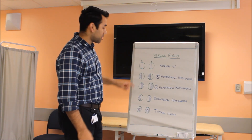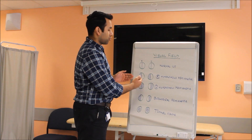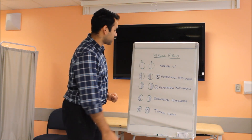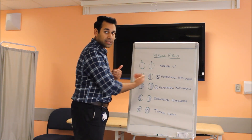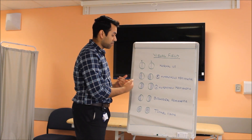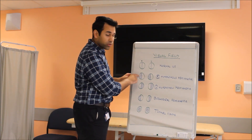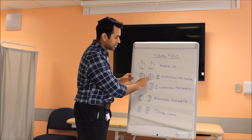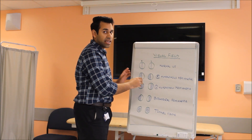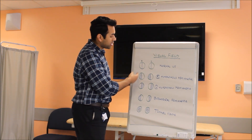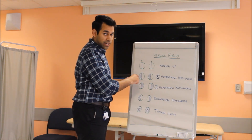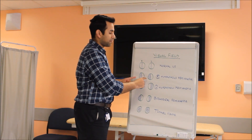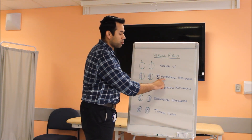The second diagram shows right homonymous hemianopia. In this type of visual field defect, the right sides of both eyes are affected — so the temporal side of the right eye and the nasal side of the left eye will be defective. The dashes in this diagram show the defective side, representing right-sided homonymous hemianopia.